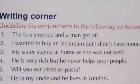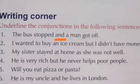Underline the conjunctions in the following sentences. First question: The bus stopped and a man got off. The conjunction here is 'and' — underline it. Second question: I wanted to buy an ice cream, but I didn't have money. The conjunction used in the second sentence is 'but.'